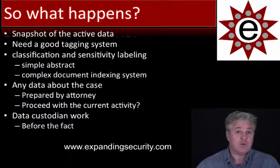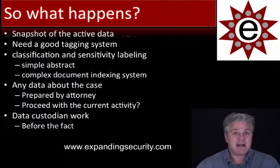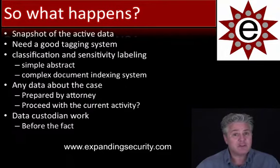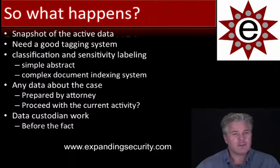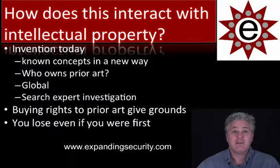It could be a complex document indexing system done by your data custodians. Any data about the case is going to need to be prepared by the attorney — the attorney may direct you to not proceed with your current activity of inventiveness. What you really need is a good data custodian, and their job has to be done way before the fact, way back when you first start all of this activity.